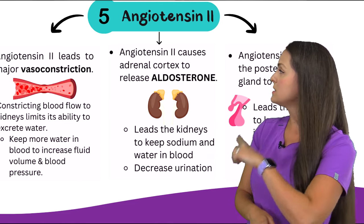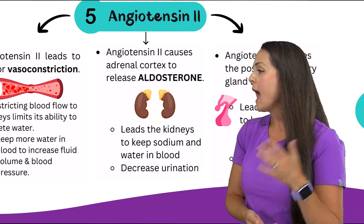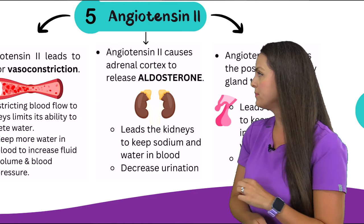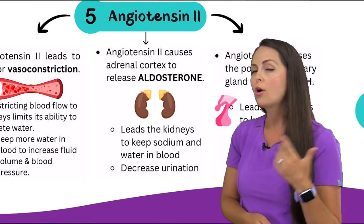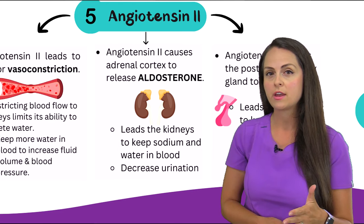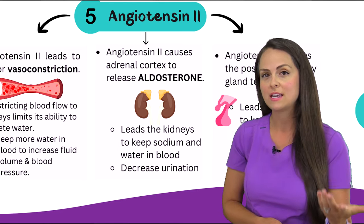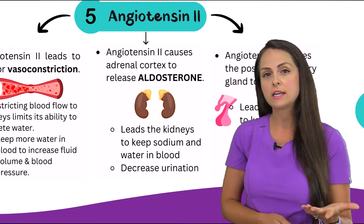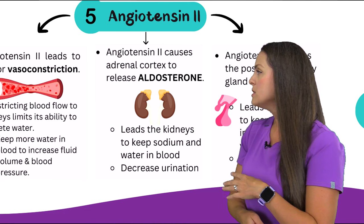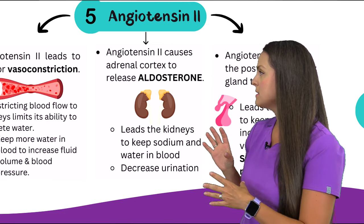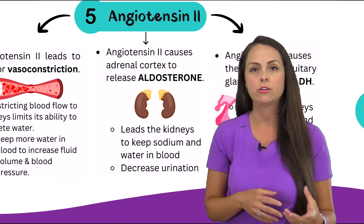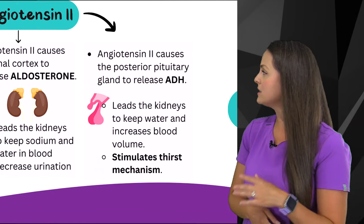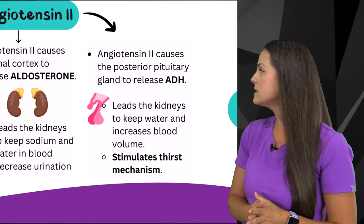In addition, angiotensin 2 is going to cause the adrenal cortex to release a hormone called aldosterone. Aldosterone causes the kidneys to retain sodium, which also causes us to retain water. We want this because we're trying to increase blood volume, so whenever this happens your patient will have a temporary decrease in urination, which again is what we want.